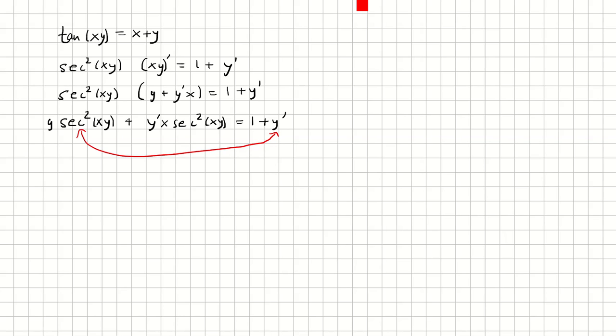We're basically going to subtract both of those from both sides, so I'm going to have y prime x secant squared xy minus y prime equals 1 minus y secant squared xy.